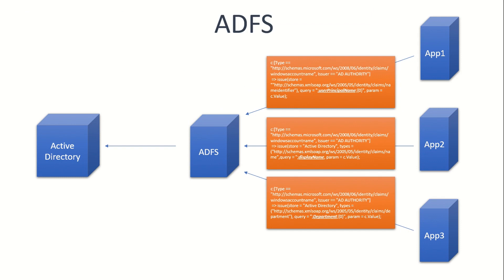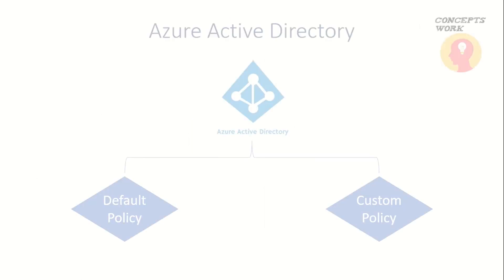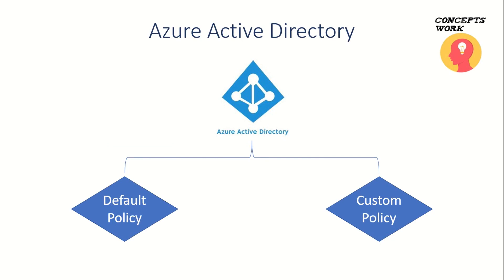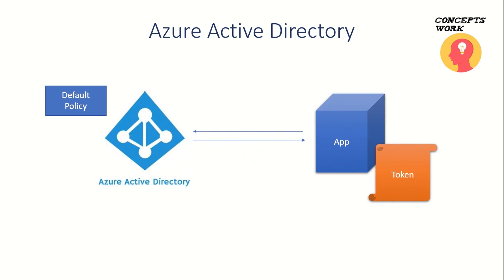In ADFS you were creating custom claim rules, whereas in Azure AD you have policies. There is a policy that exists by default for every tenant that includes a specific token type. Similarly, you can create custom policies wherein you can add different claims, and those claims will be added in the token which Azure AD is sending to the application. If your application is contacting Azure AD and there is no custom policy, by default the default policy will embed or encode the required claims in the token and send it to your application.